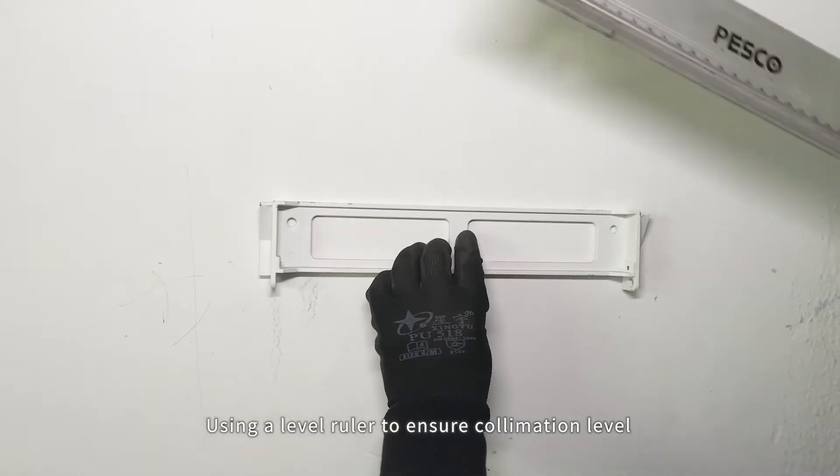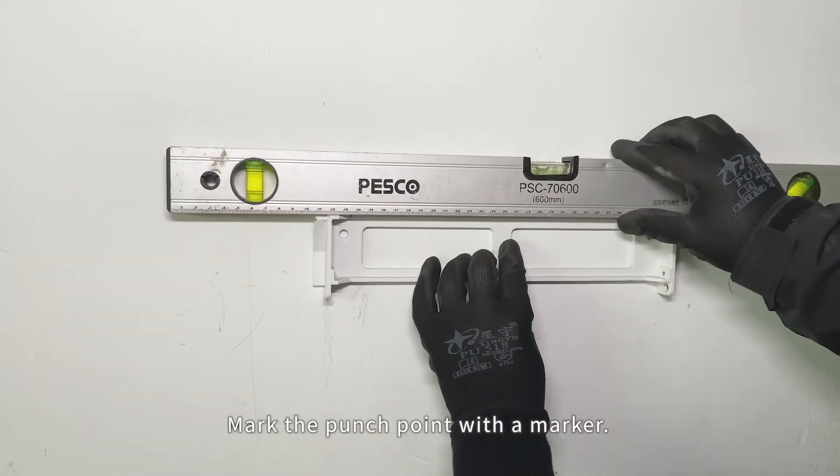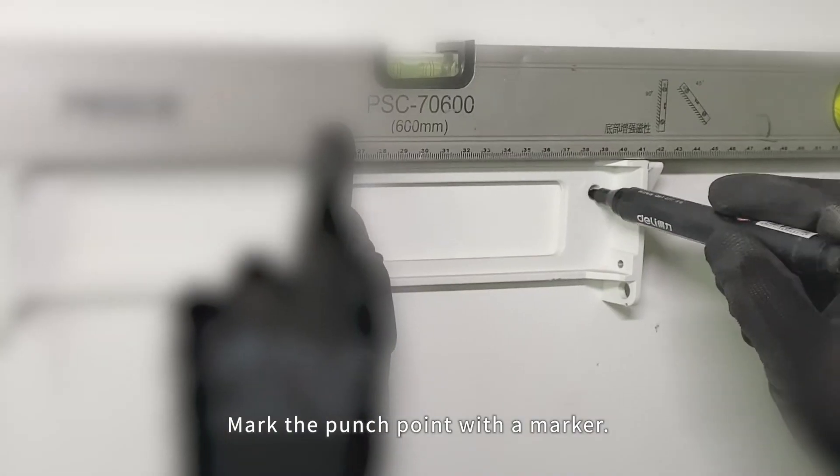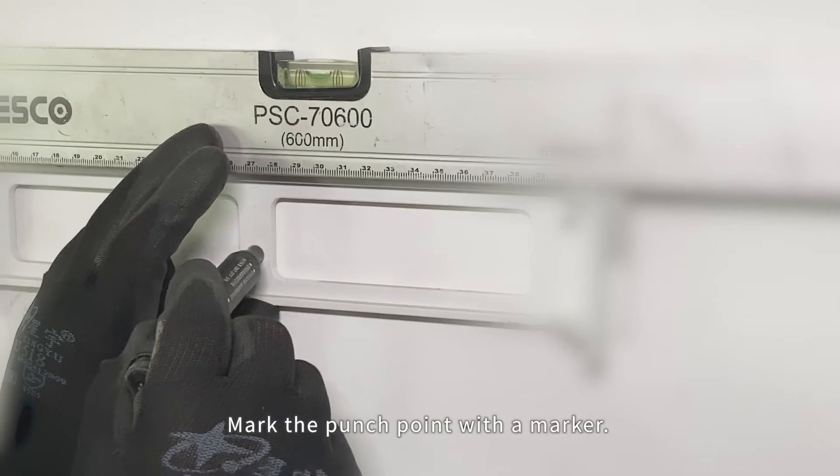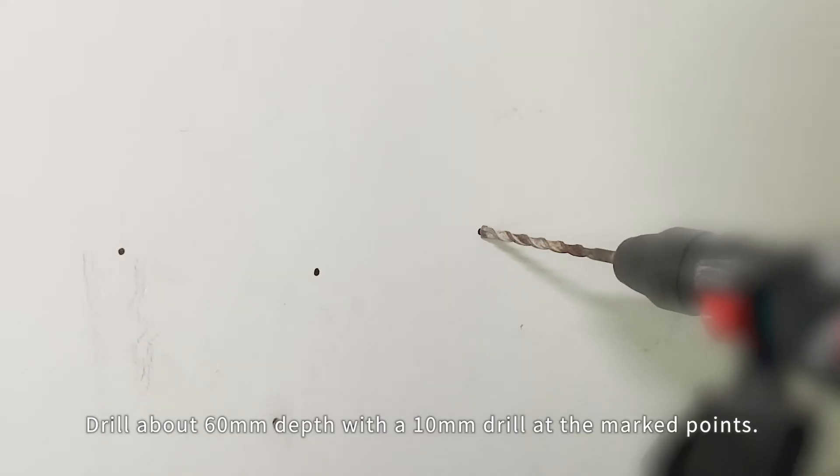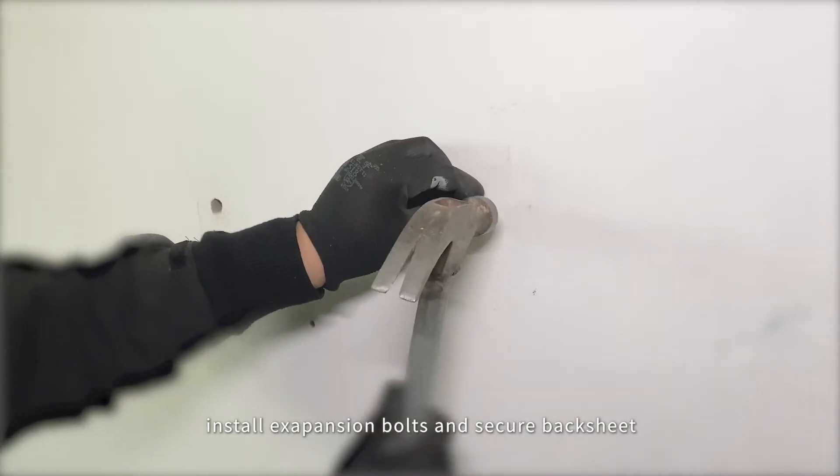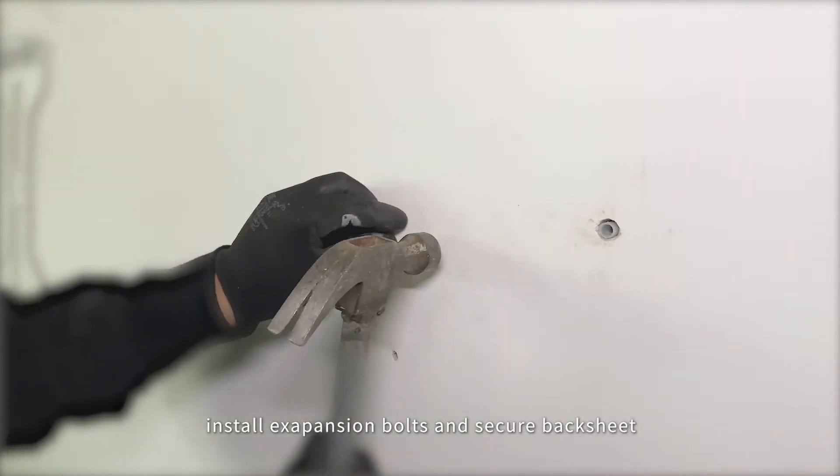Using a level ruler to ensure collimation level, mark the punch point with the marker. Drill about 60mm depth with a 10mm drill at the marked points. Install expansion bolts and secure backsheet.